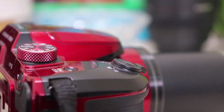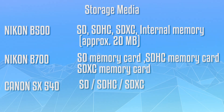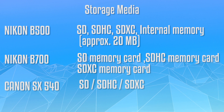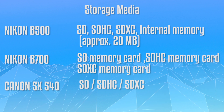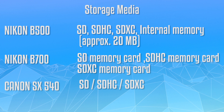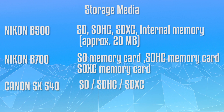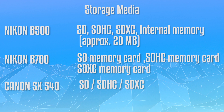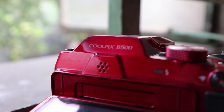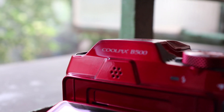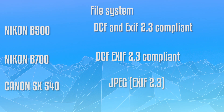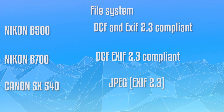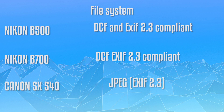Coming to storage media, you can install an SD card, SDHC card, or SDXC card on the Nikon B500, and the same will be for the Nikon B700 and the Canon SX 540. Talking about the file system, the Nikon B500 and the Nikon B700 support DCF files and are EXIF 2.3 compliant.